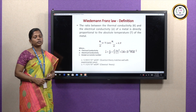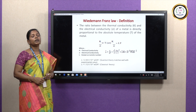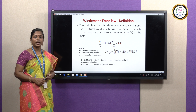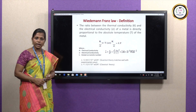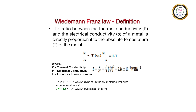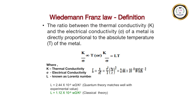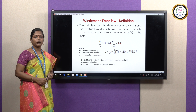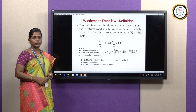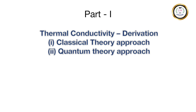By the classical approach, the Lorentz number is not proved to coincide with the experimental value. Using the classical approach, the Lorentz number comes out to be 1.12 × 10⁻⁸ Watt Ohm per Kelvin squared. We will see both approaches in this session, starting first with the classical approach to derive thermal conductivity K.